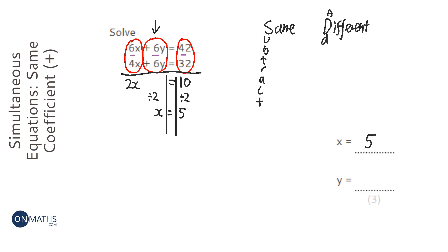Now that is only half of the question done because we need to find out what y is. So I'm going to pick one of the equations, I'm going to pick the one at the top, and I'm going to substitute x in. So I'm going to do 6 times 5 plus 6y equals 42, and you could have used the second equation as well.